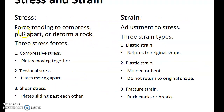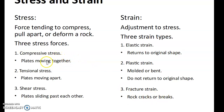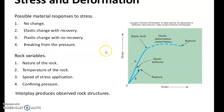Diastrophism acts against stress and strain. At different boundaries, plates are either pulled apart, deformed, or shifted. They're pushed against each other along the strain line. There's elastic strain, where rock returns to its original shape; plastic strain, where rock is molded or bent and does not return to original shape; and fracture strain, where the rock cracks or breaks. The three stress forces are compressive stress (plates moving together), tensional stress (moving apart), and shear stress (sliding past each other).